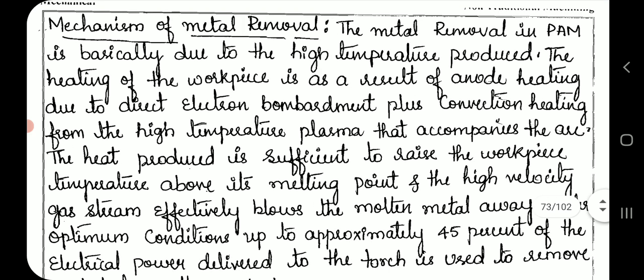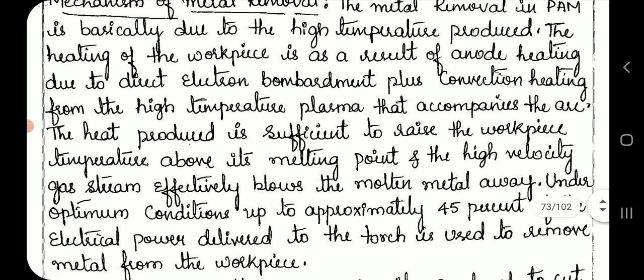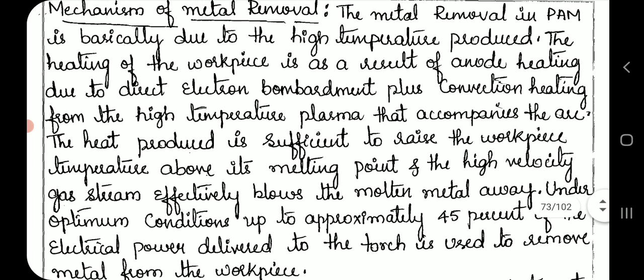Mechanism of metal removal: the metal removal in plasma machining is basically due to the high temperature produced. The heating of the workpiece is a result of anode heating due to direct electron bombardment, plus convection heating from the high temperature plasma that accompanies the arc.